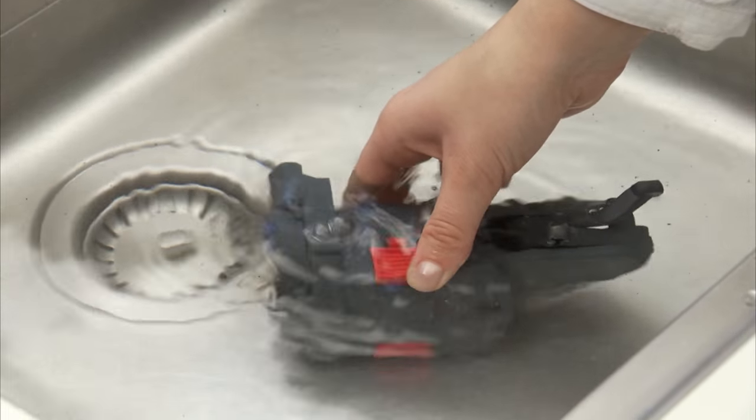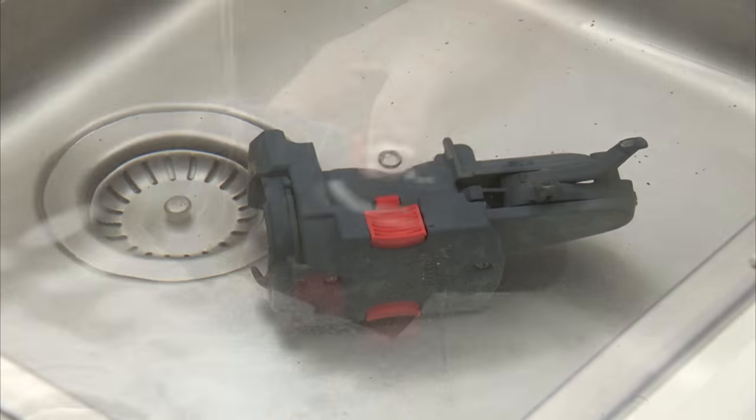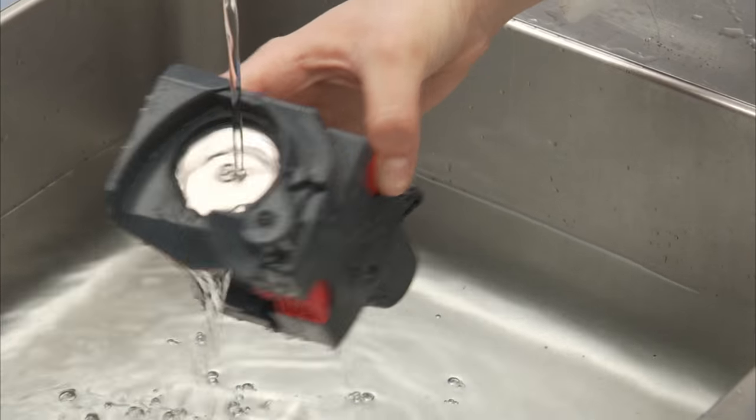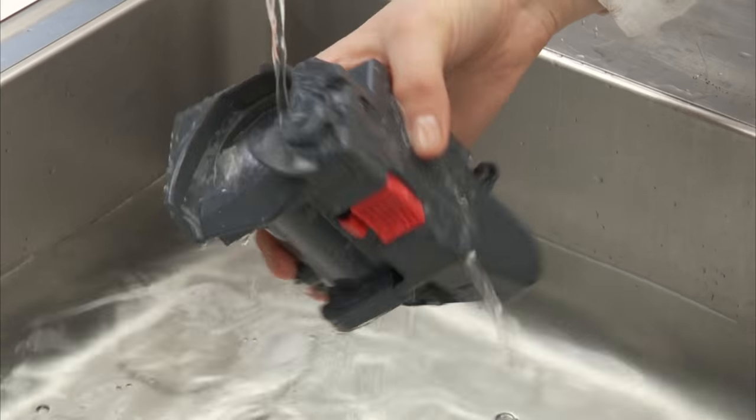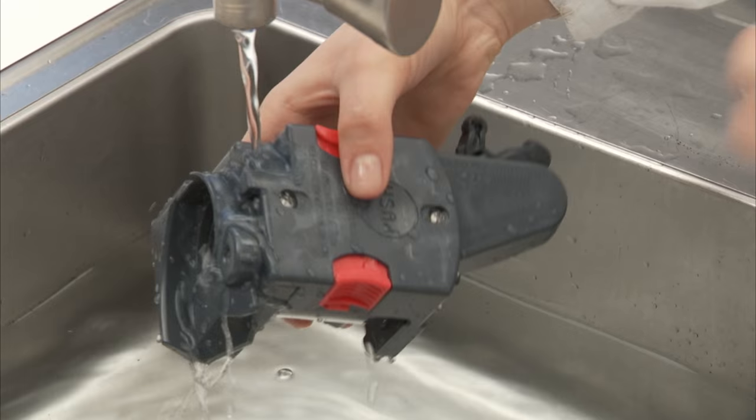Soak the infuser in water for about five minutes, then rinse under the tap. Rinse with water only, no dishwasher. Do not use washing up liquid to clean the infuser as it may damage it.